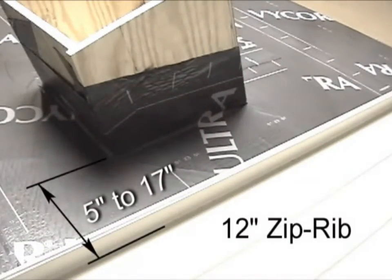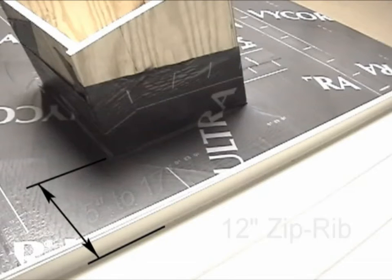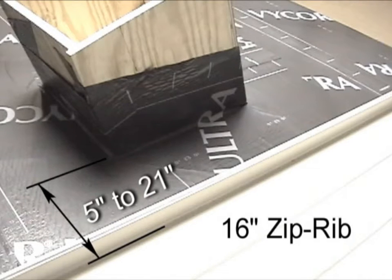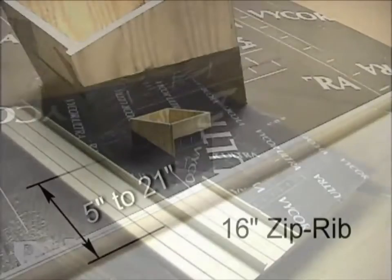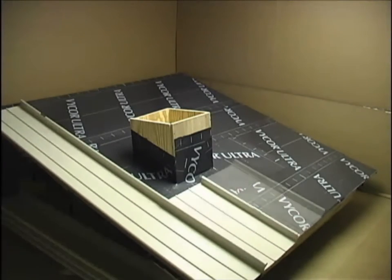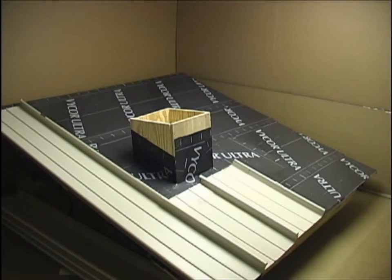Install ZipRib until the panel is within 5 to 17 inches when using the 12 inch profile or 5 to 21 inches when using the 16 inch profile. Install the downslope panels until the panel is a minimum of 5 inches beyond the penetration.